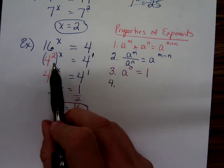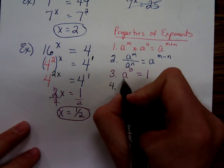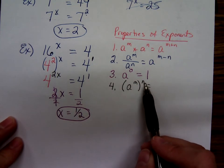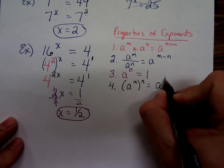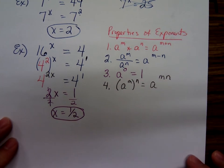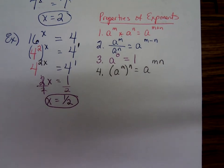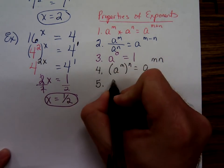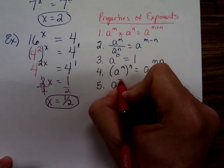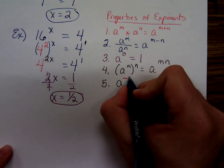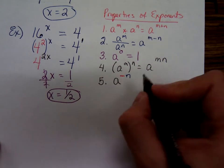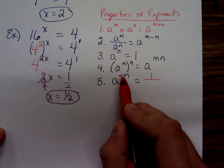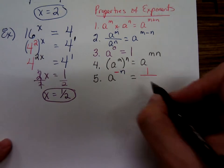The fourth rule is the one I used right here. A to the m raised to the n equals a to the m times n. Number 5 is our definition of a negative exponent. A to the negative n means 1 over a to the positive power.